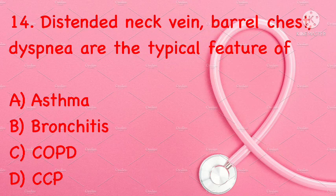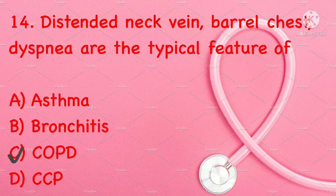Distended neck veins, barrel chest, and dyspnea are typical features of: asthma, bronchitis, COPD, or CCP. Correct answer is C: COPD.